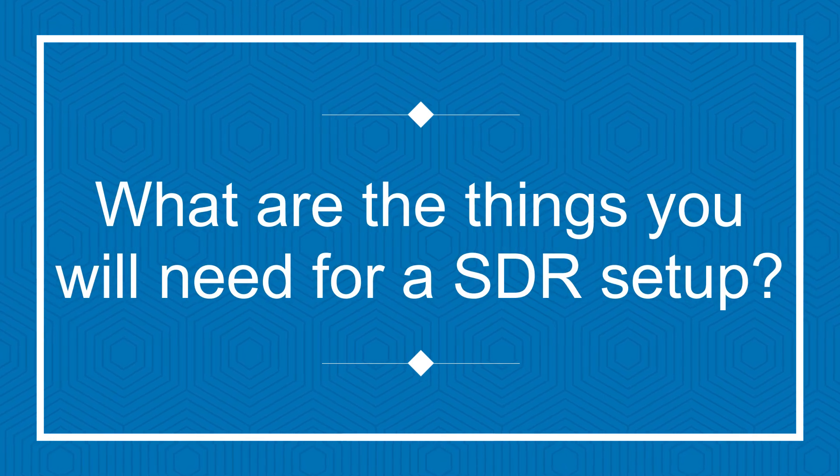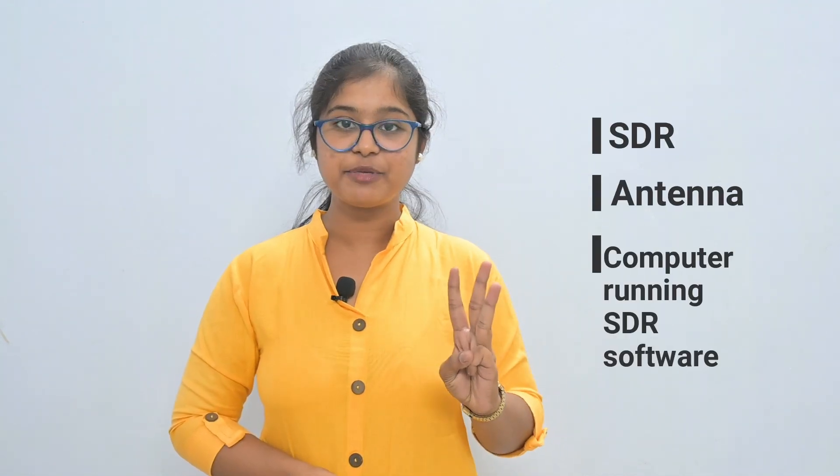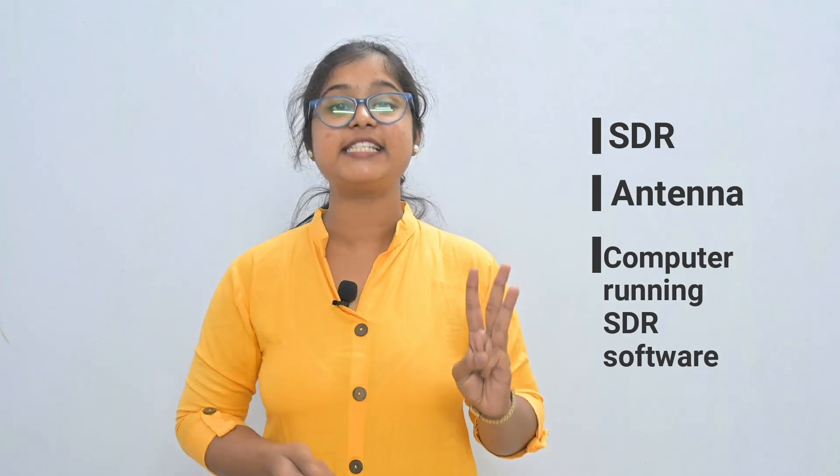What are the things you will need to set up an SDR? To set up an SDR, you will basically need three components: an SDR, an antenna, and a computer running SDR software. You will just need these three components and you can set up your own SDR receiver.